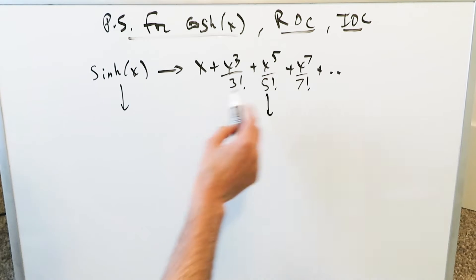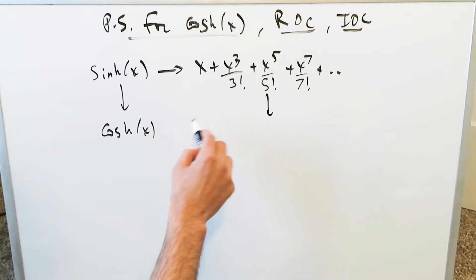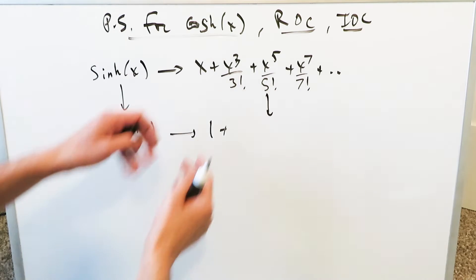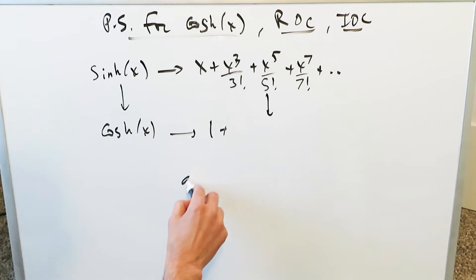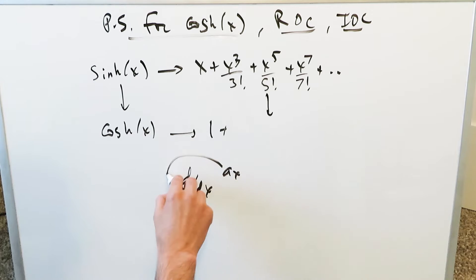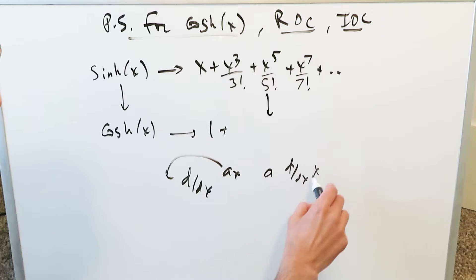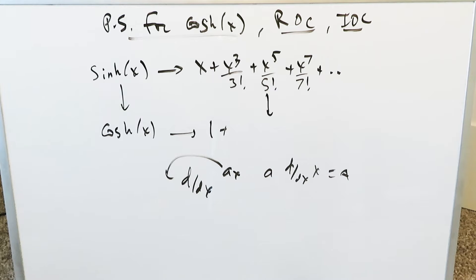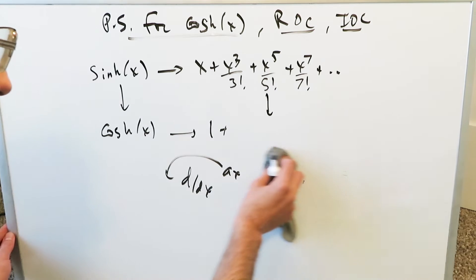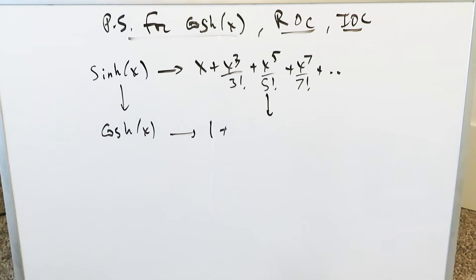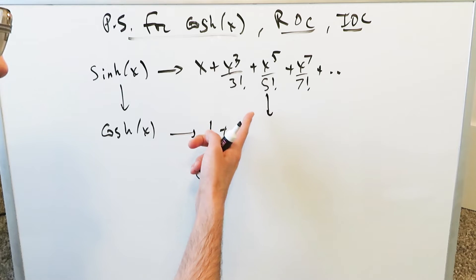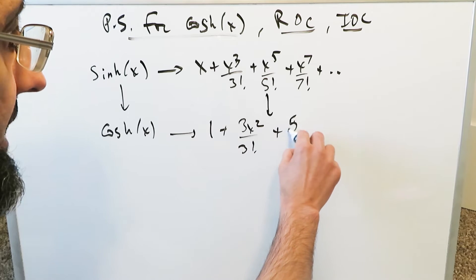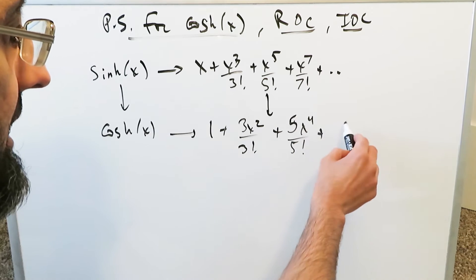If you take the derivative of the hyperbolic sine series, you will develop the series for hyperbolic cosine. The first term will become a 1. You can push the factorial coefficients out and focus on the derivative of just the variable component, which would just bring down the exponent. For example, d/dx of ax gives you a. You can push the factorial out and exclude it from the derivative procedure. You end up getting the hyperbolic cosine series — this is the informal shortcut way. You'd have 3x squared over 3 factorial, then 5x to the 4 over 5 factorial, and so on.